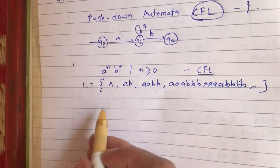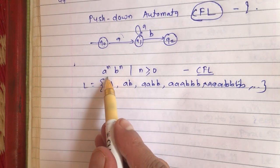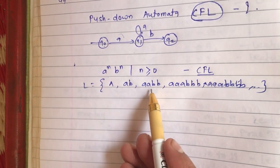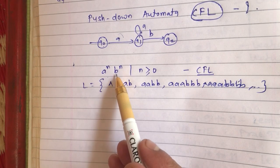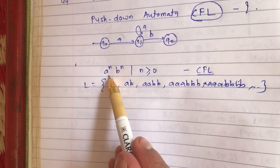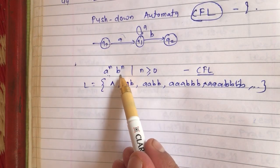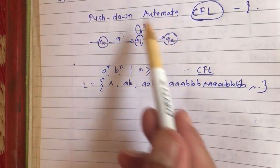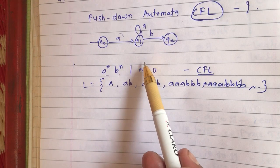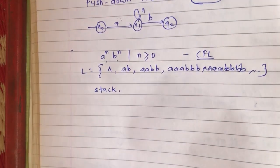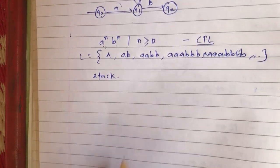For recognizing these types of languages, we must be able to verify that the number of a's equals the number of b's. While processing b's, we need to recall how many a's have been processed in the string. Unless we can store the count of a's, we cannot check whether the same number of b's are present. A finite state machine has no capability to perform that storage, so for performing this storage we use a component called a stack.